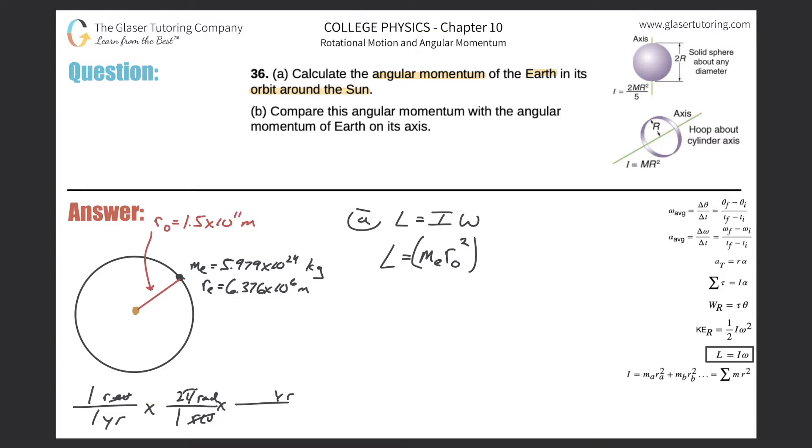For every year, there's 365 days. You could do 365.25, it doesn't really make a significant difference. Then from day to hour, in one day there's 24 hours. And then from hour to second, one hour is 3,600 seconds. So we get 2 pi divided by 365 times 24 times 3,600.